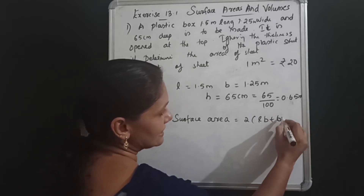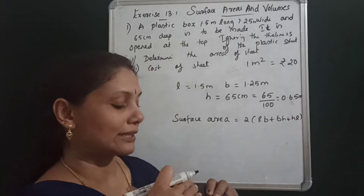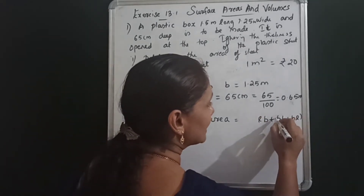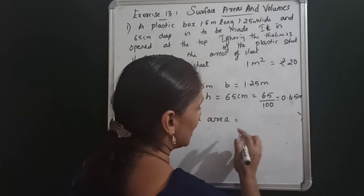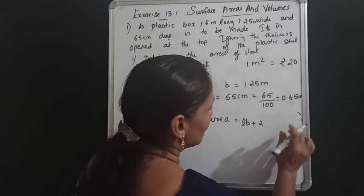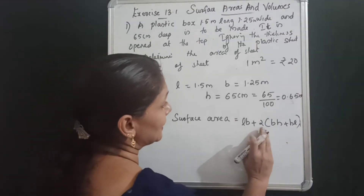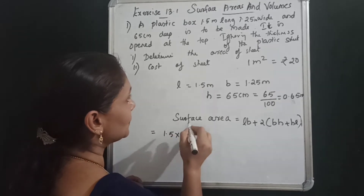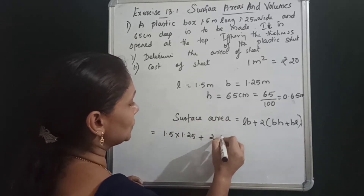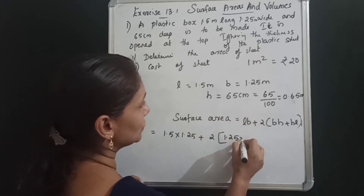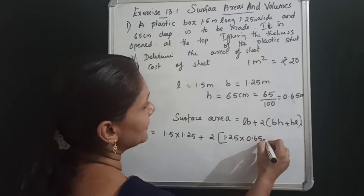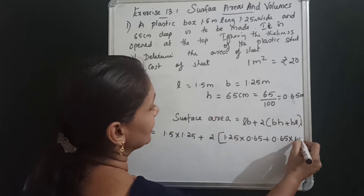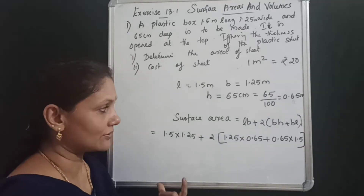Applying the formula with L = 1.5, B = 1.25, H = 0.65: we calculate LB = 1.5 × 1.25 = 1.875, then 2 × (1.25 × 0.65) = 2 × 0.8125 = 1.625, and 2 × (0.65 × 1.5) = 2 × 0.975 = 1.95. The sheet required is the sum of these face areas.